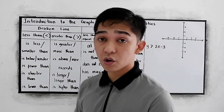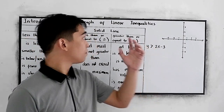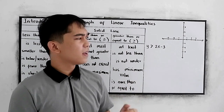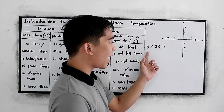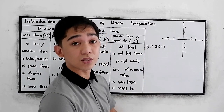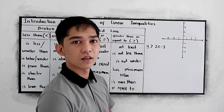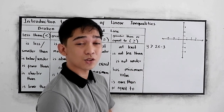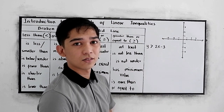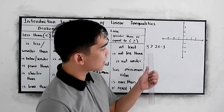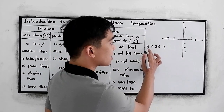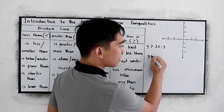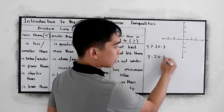Now in this video, we're going to discuss how to use the broken line and the solid line. Let us graph this example: y is greater than 2x minus 3. In linear equations, we can graph this using rise over run, or simply written in slope-intercept form. We can rewrite it as y equals 2x minus 3.